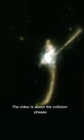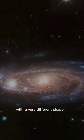The video is about the collision phases of two galaxies and the different colliding galaxies that are in these stages. So you see the galaxies that are at that stage. And finally, when the galaxies collide completely, it becomes a single large galaxy with a very different shape.